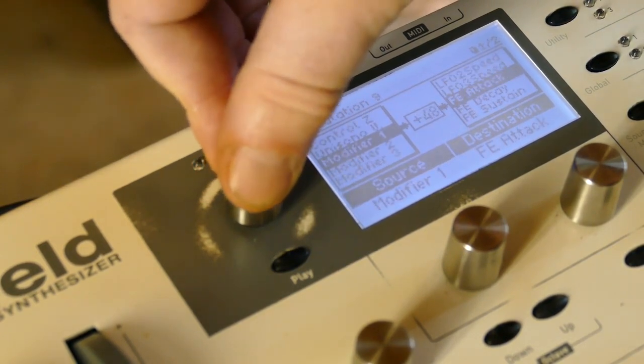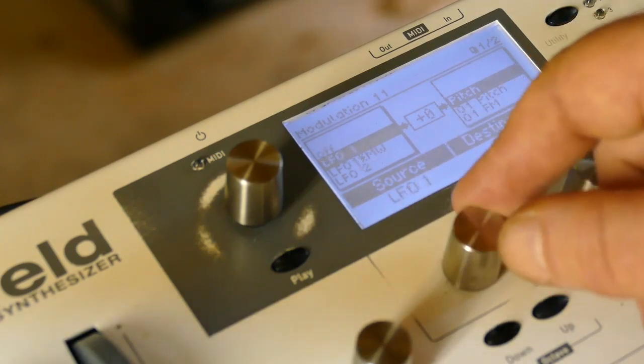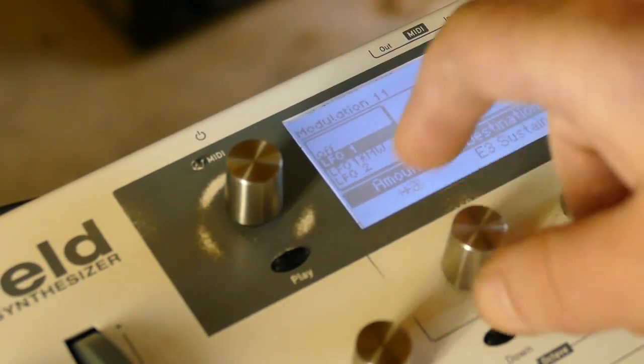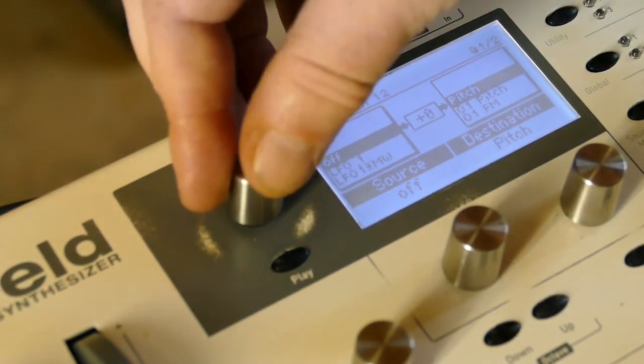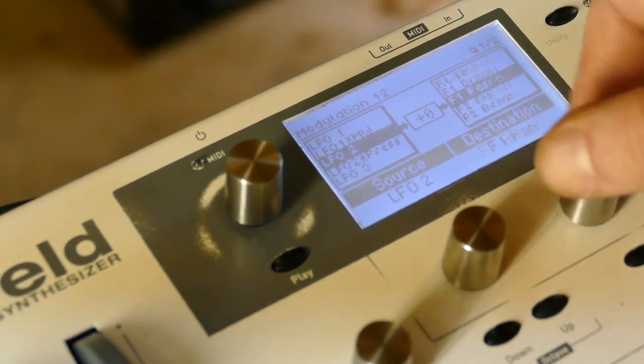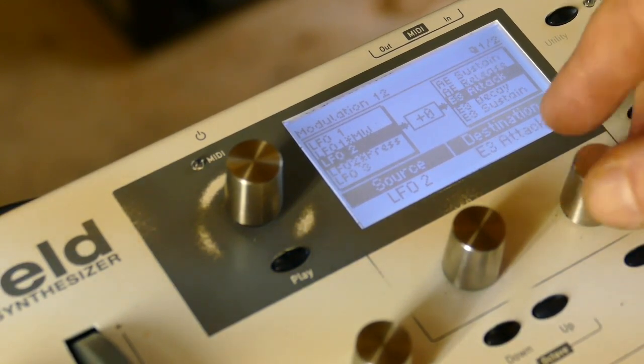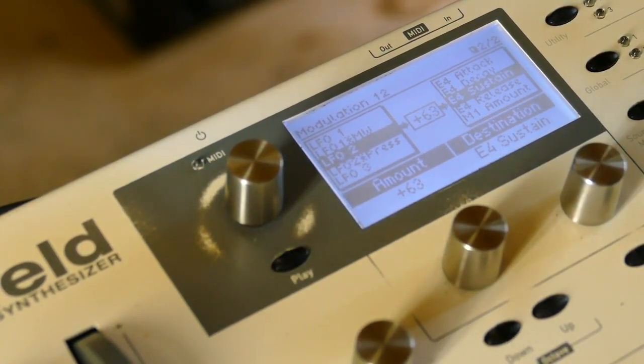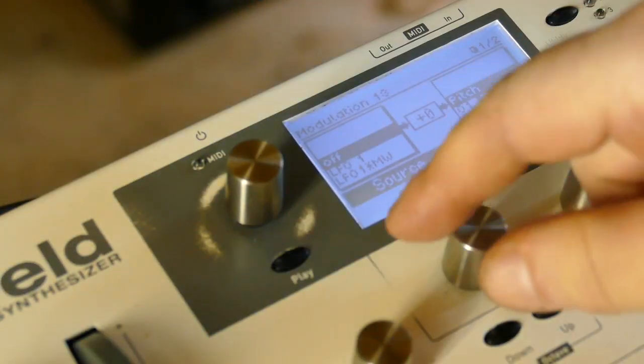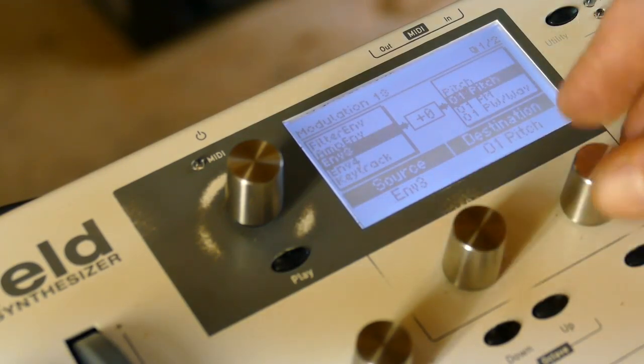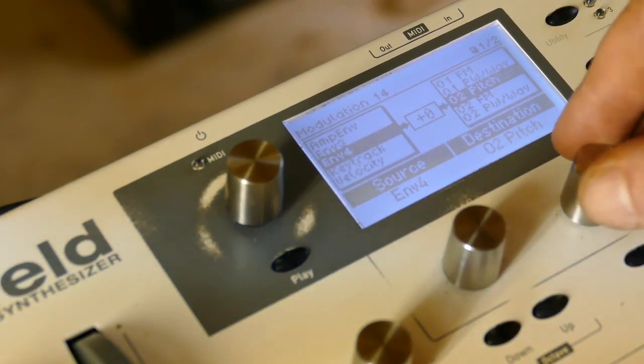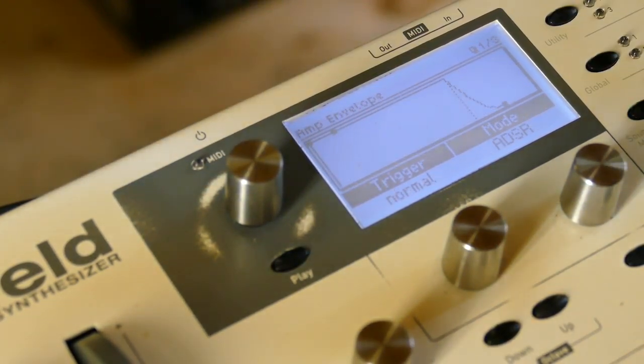On an open slot, I'm going to say LFO 1 controls envelope 3 sustain and crank it all the way up. On mod slot 12, have LFO 2 control envelope 4 sustain and crank it all the way up. Over here I'm going to have envelope 3 controlling oscillator 1 pitch, leave it at 0 for now because I have to now lag these.